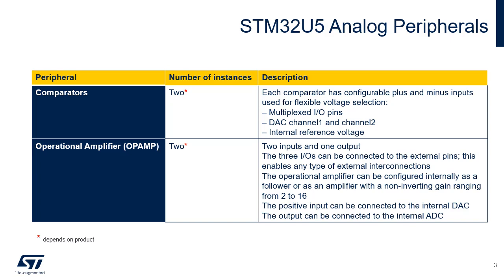The operational amplifiers may reduce the need for an external stand-alone op-amp. As these op-amps can be configured in stand-alone mode with all terminals available for the user, it is possible to use them as a voltage follower, non-inverting and inverting amplifiers, as well as analog filters such as low or high-pass filters. They can also act as pre-amplifiers for the ADC input.